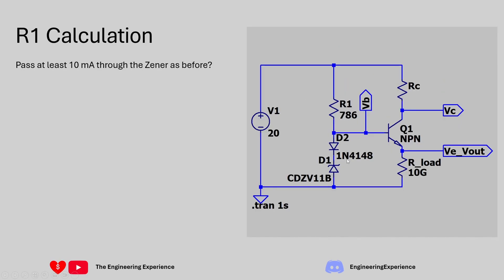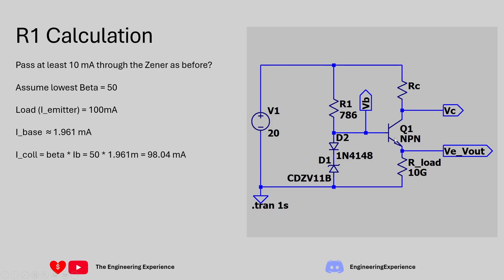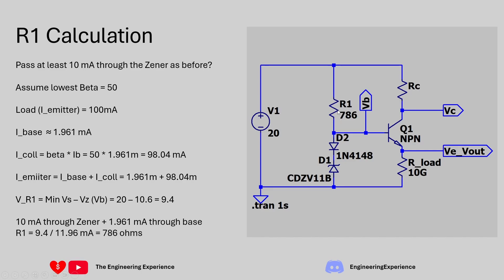To calculate R1, the question tells us we need to pass at least 10 milliamps through the Zener. Assuming a minimum beta of 50 and a load current of 100 milliamps, we need to pass approximately 1.96 milliamps through the base to get a collector current of 98.04 milliamps. The emitter current equals base current plus collector current: 1.96 plus 98.04 gives our load current of 100 milliamps. So we have 10 milliamps flowing through the Zener and 1.961 milliamps into the base, giving a current through R1 of 11.96 milliamps.